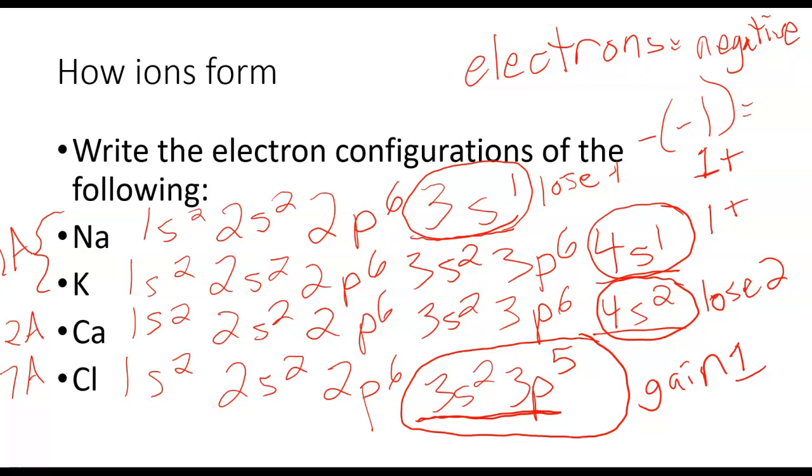We can do the same thing for this one. It's going to be one plus, because we're losing one electron. If we lose two electrons, we're subtracting two negatives. So we get a two positive charge.